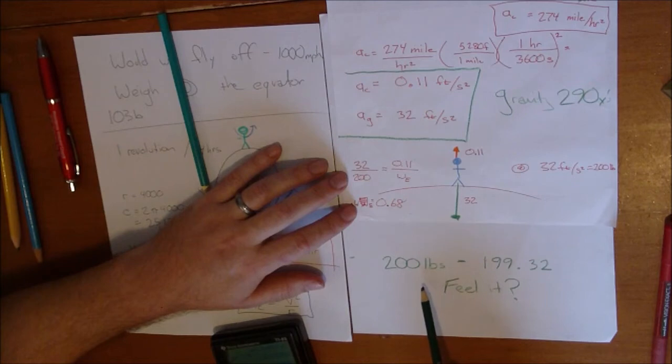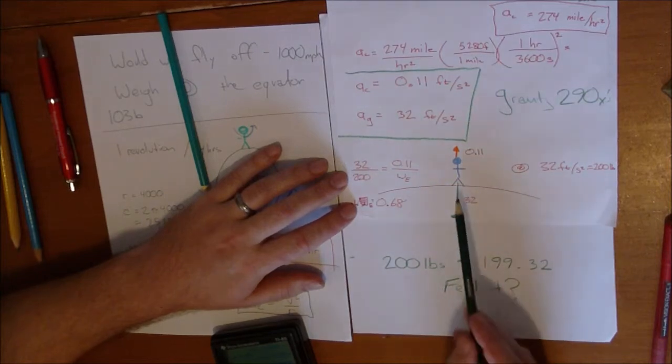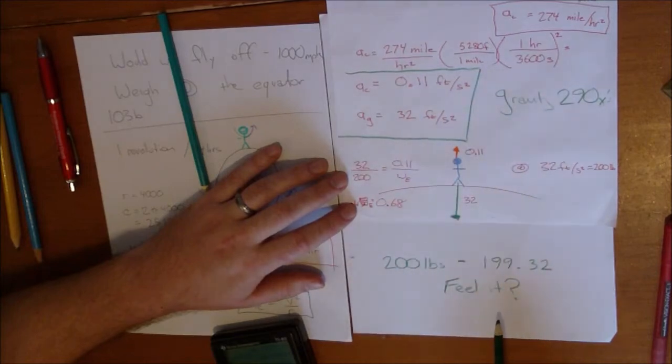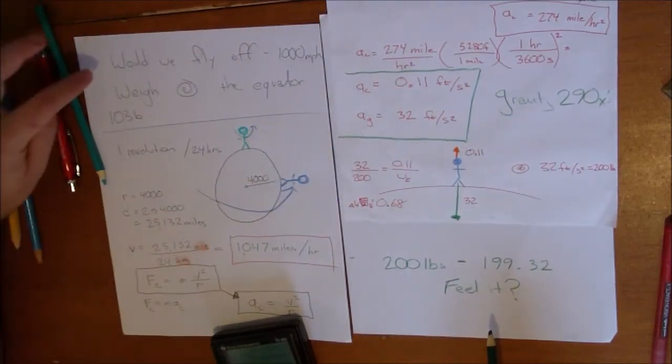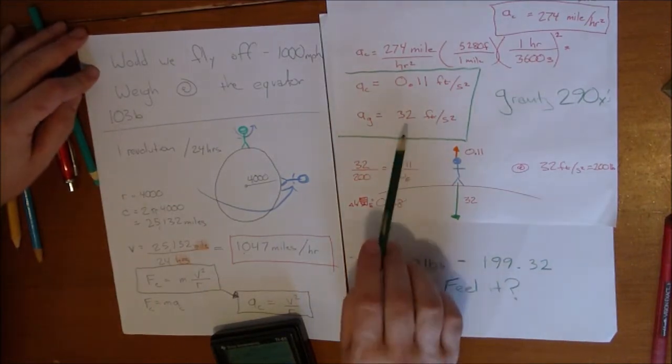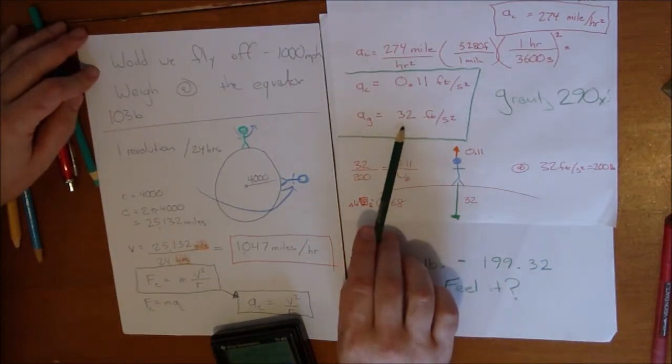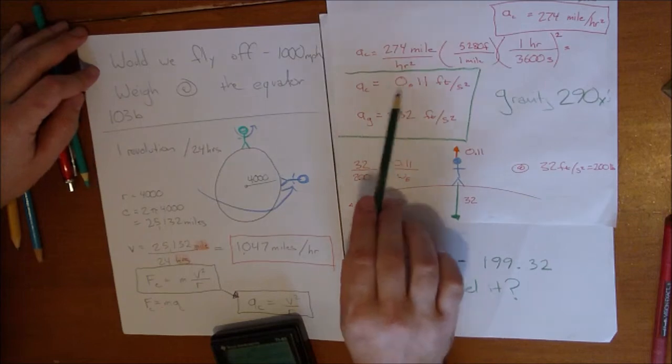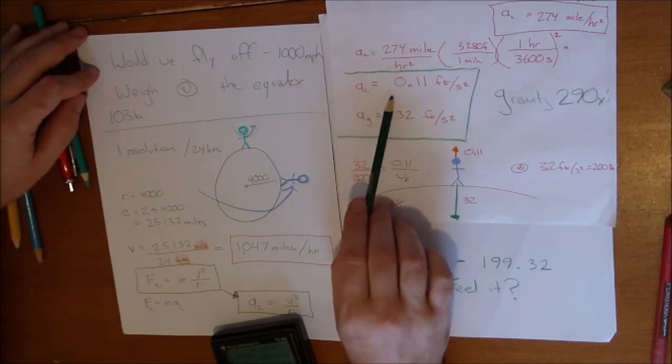The altitude has at least as much effect when you go up a mountain to 10,000 feet. This has as much effect on the perceived weight as the centrifugal effect of being at the equator spinning 1,000 miles an hour. So would we fly off? No. Gravity is 290 times more powerful than the centripetal acceleration due to the spinning.